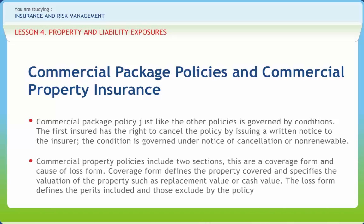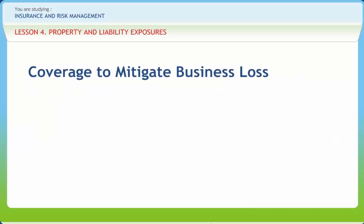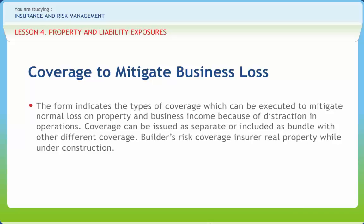Commercial property policies include two sections: a coverage form and a cause of loss form. Coverage form defines the property covered and specifies the valuation of the property such as replacement value or cash value. The loss form defines the perils included and those excluded by the policy. The form indicates the types of coverage which can be executed to mitigate normal loss on property and business income because of disruption in operations. Coverage can be issued as separate or included as a bundle with other coverage. Builders risk coverage insures real property while under construction, and the policy owner can be the contractor or the owner of the building.